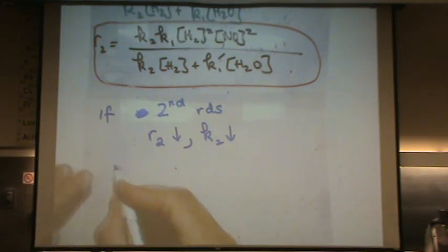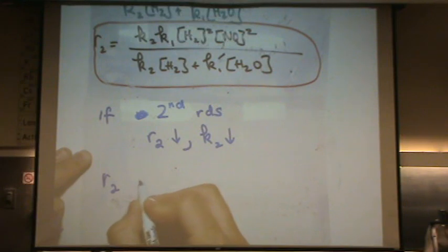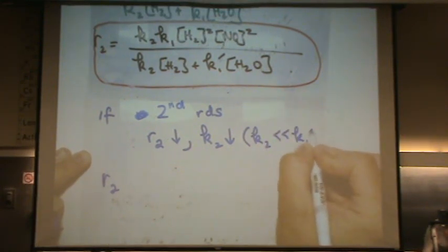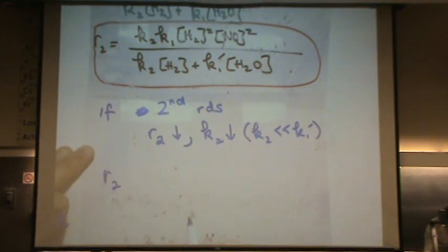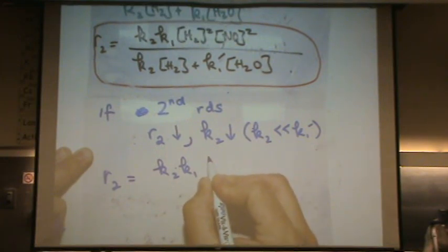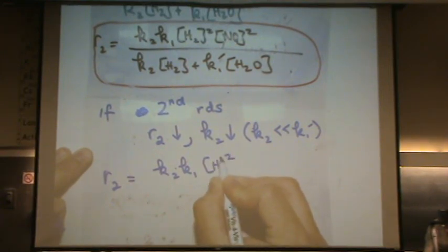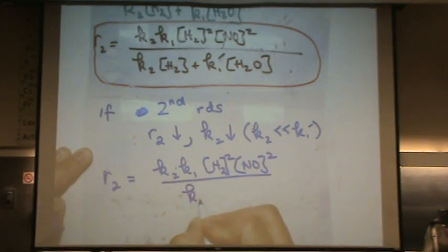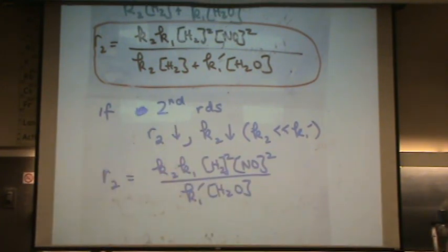I will get rate 2. So in other words, I'm saying up here K2 is a lot smaller than K1 prime if it's a second step's rate determining. You'll get K2 times K1 times H2 squared times NO squared all over K1 prime times H2O. Does that make sense? I just removed the smaller one. Where have you seen this before? Last answer. It was the last answer.